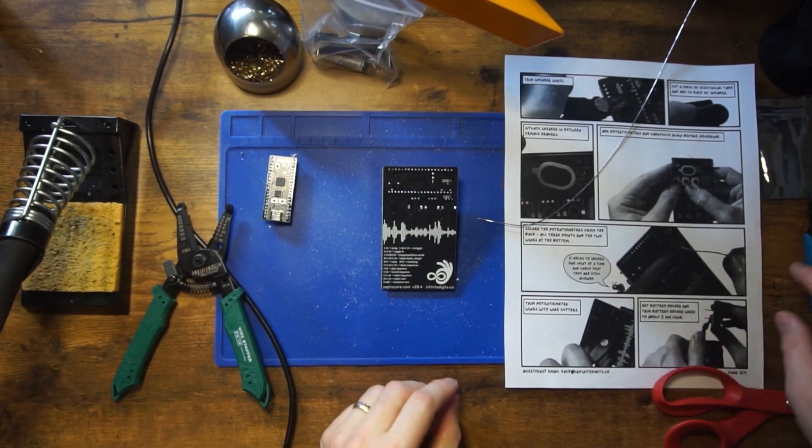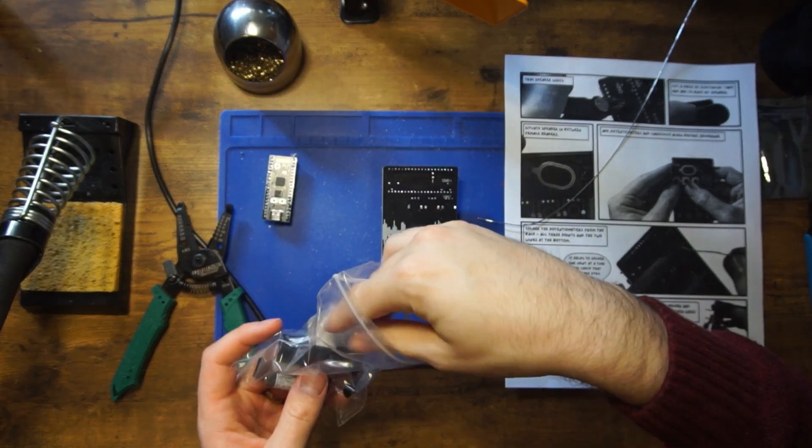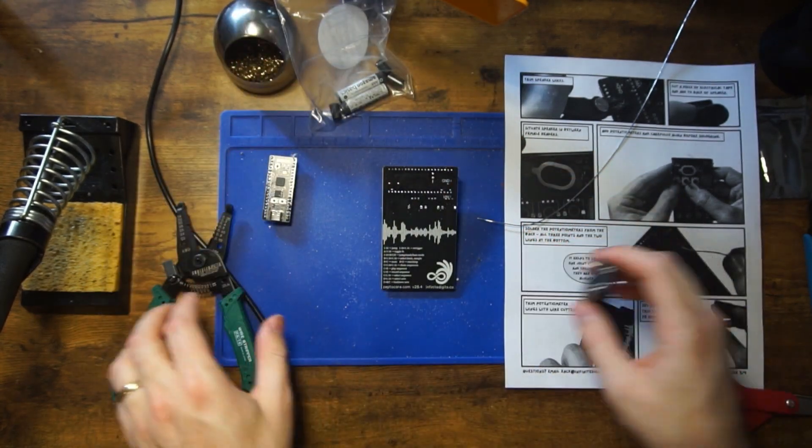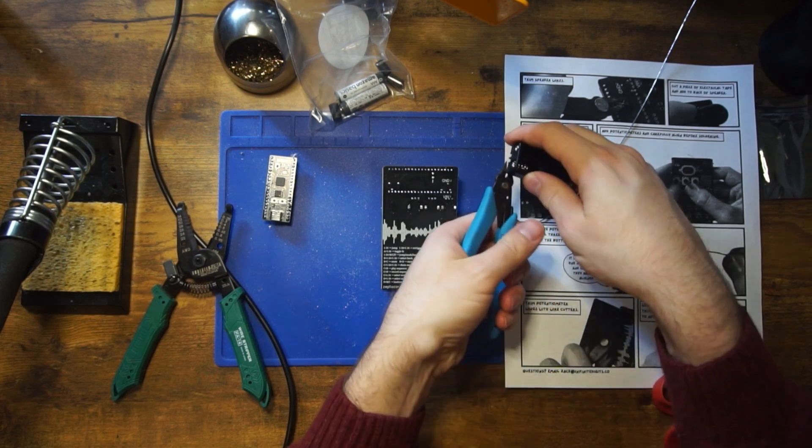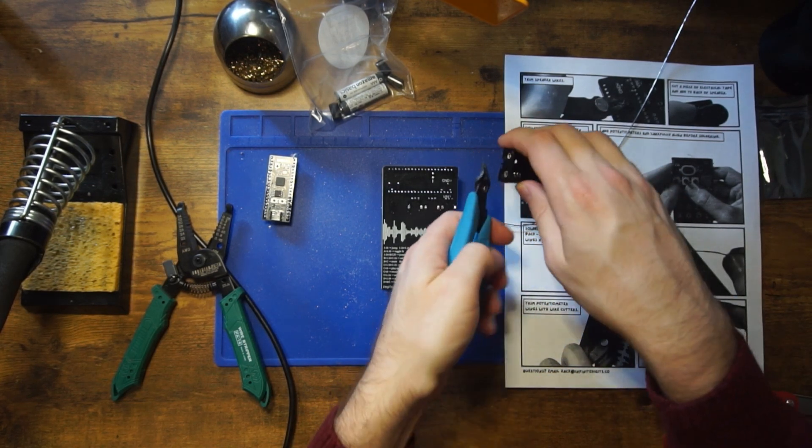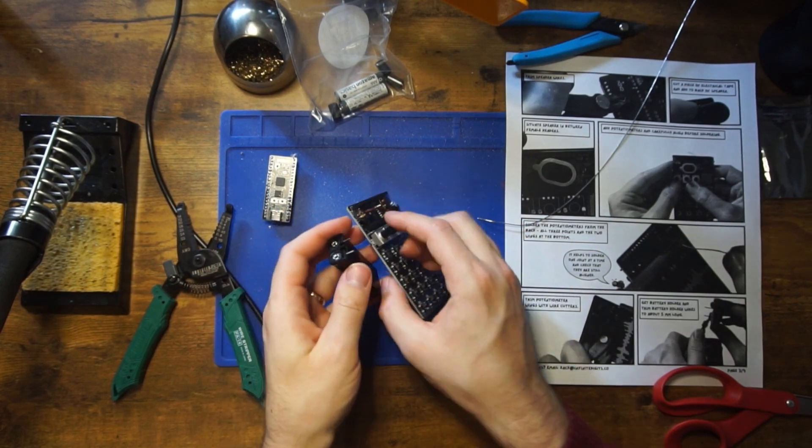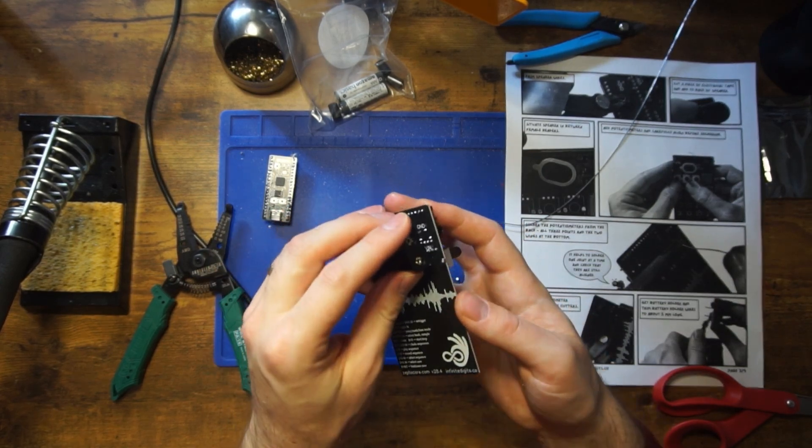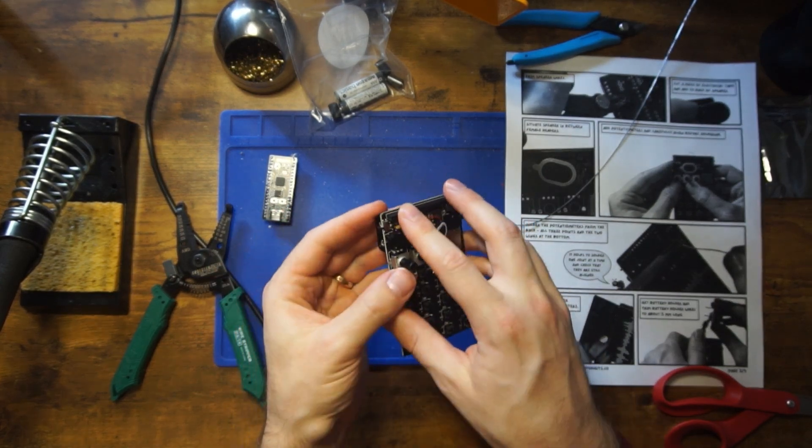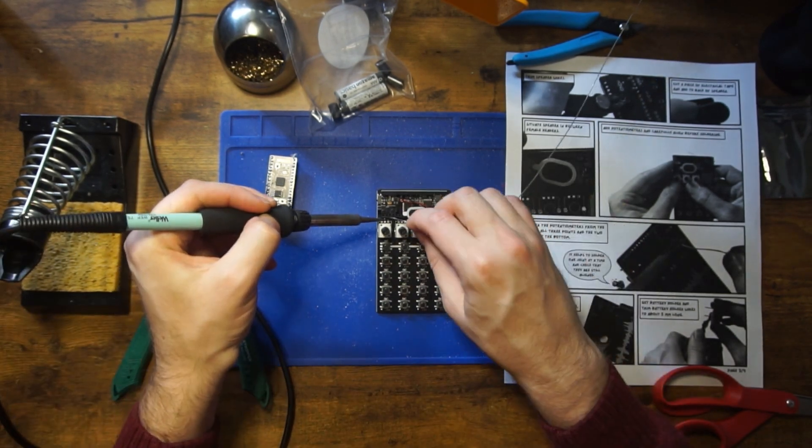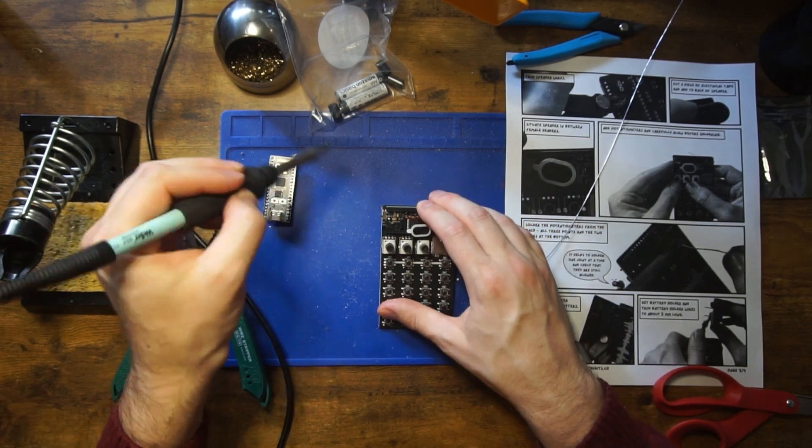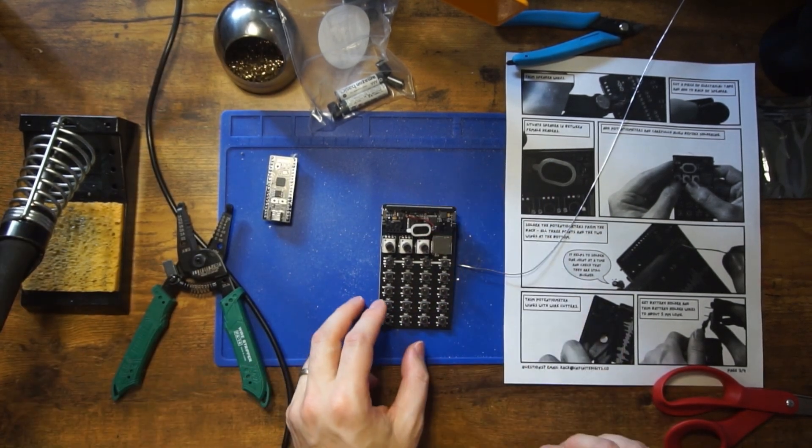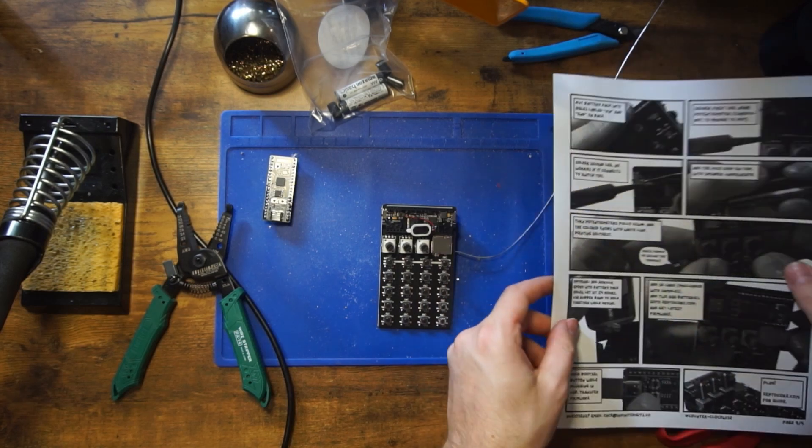Now get the battery holder from the bag. We want to trim the ends here to about five millimeters long. Put the battery pack into the holes labeled VIN and ground, and then solder both of them one at a time. Press against the battery pack to make sure it sits firm, and make sure not to make any other connections while you're soldering.